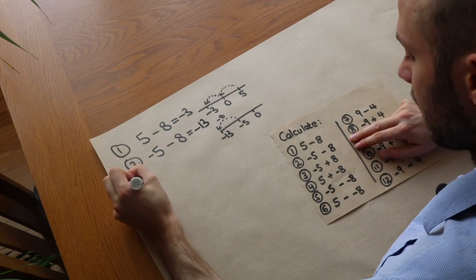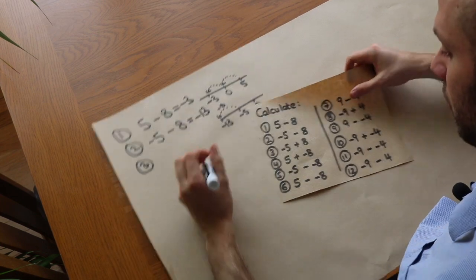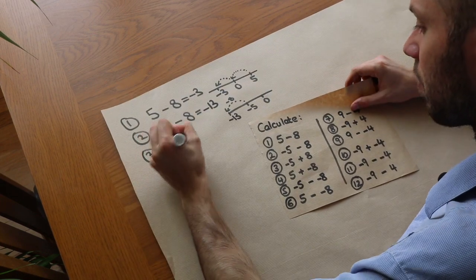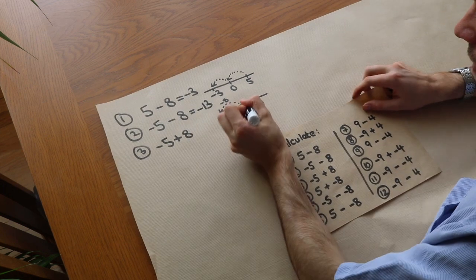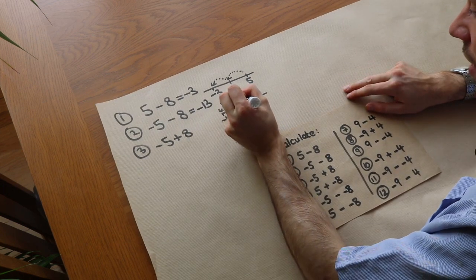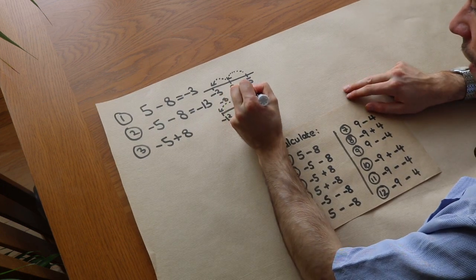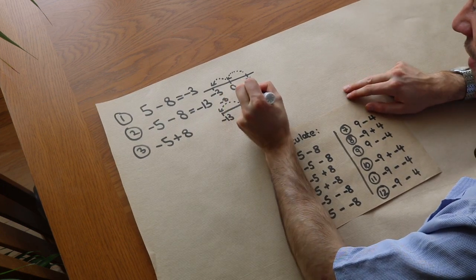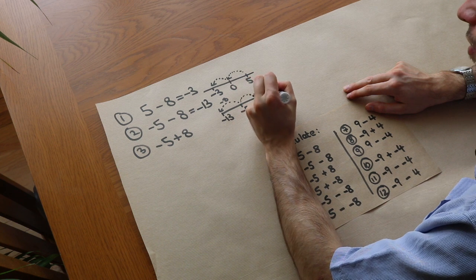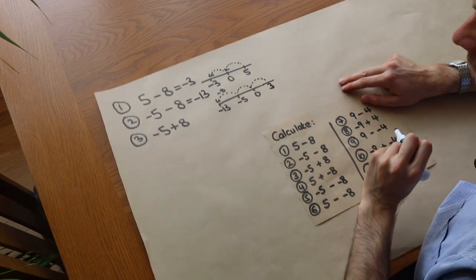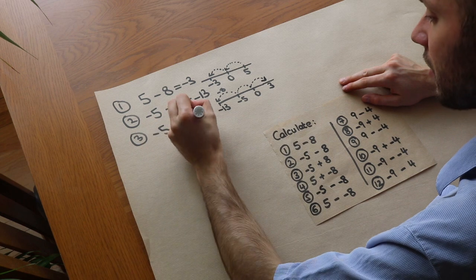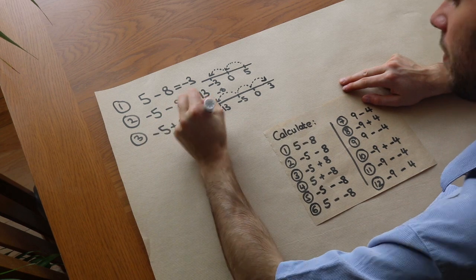What about negative five plus eight? If I start at minus five and add eight, adding five will initially get me to zero, but I've still got to add another three, so that gets me up to three.